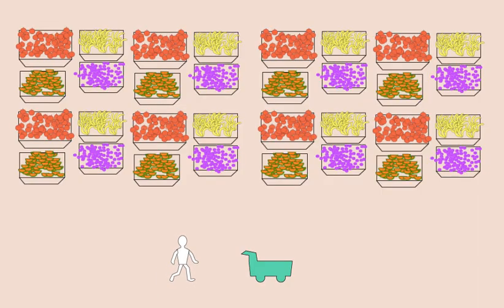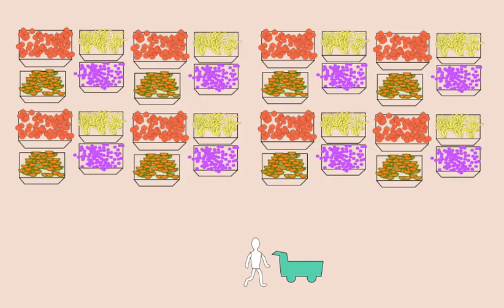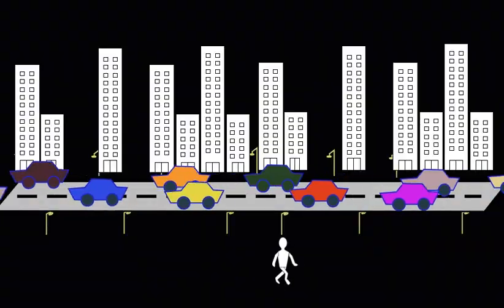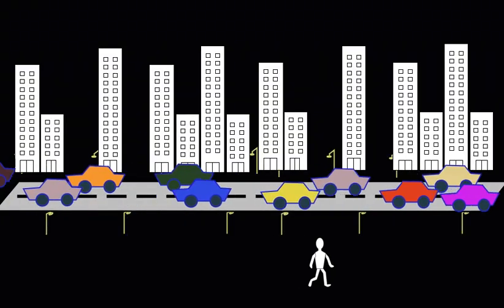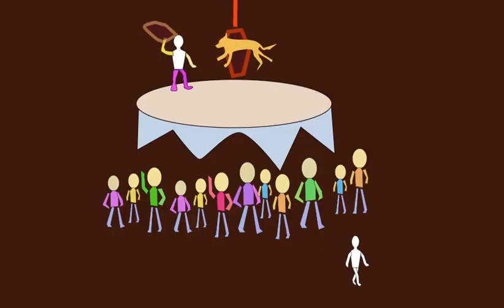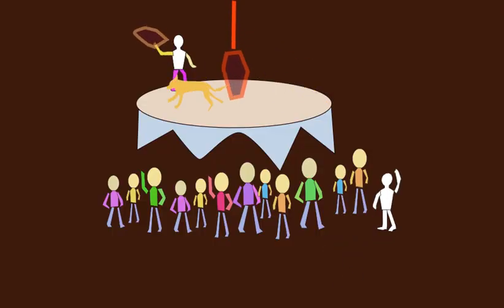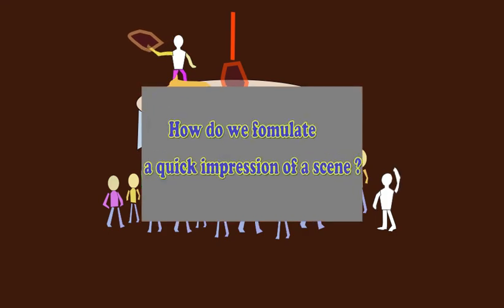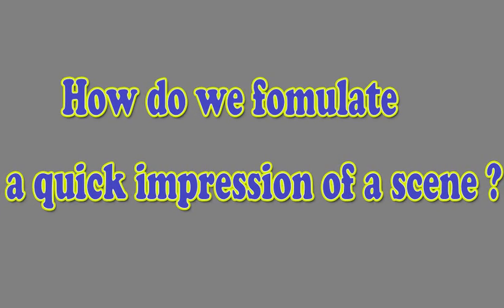In the real world, we encounter complex visual scenes every day. However, our visual system has a limited capacity and cannot process all of the details in the scene. How do we formulate a quick impression of the scene?